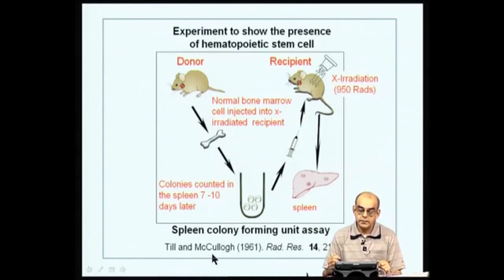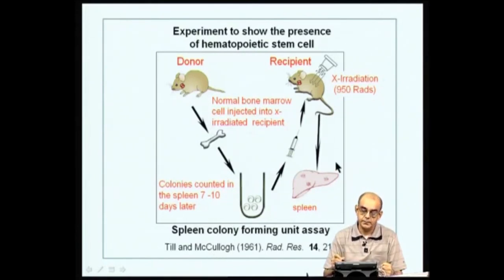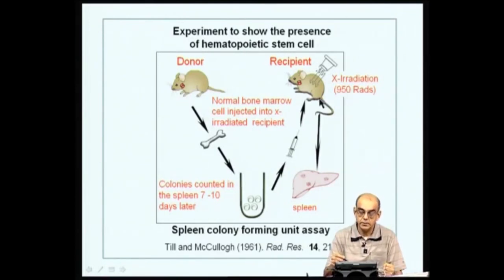In order to find out the function of various organs, experiments aimed at removing that particular organ — for example, thymectomy, bursectomy, hypophysectomy — to see what would happen once that organ is removed. Similarly, Till and McCulloch found that you could remove all the immune cells in the body of a mouse by subjecting them to X-irradiation at 950 rads. This dose was very important because it was the dose that would allow the mouse to live, while higher doses of irradiation would kill the mouse. This exposure affected all cells that had the capacity to divide or proliferate, whereas cells that did not have the capacity to proliferate would be more resistant.